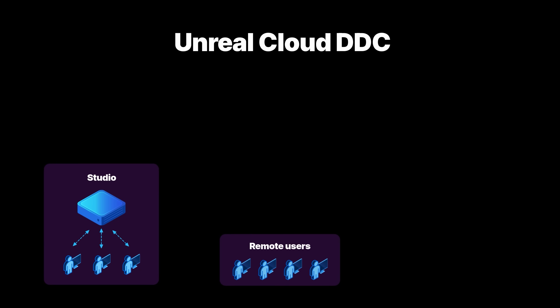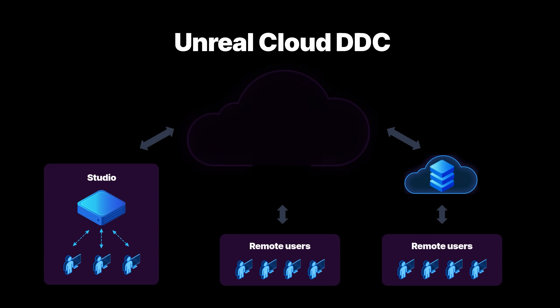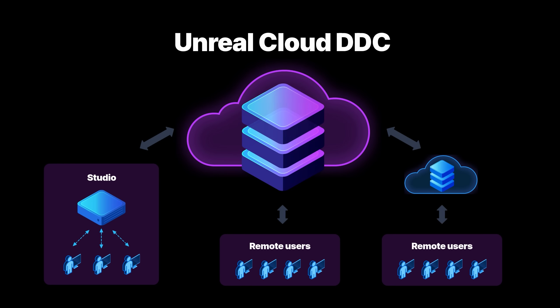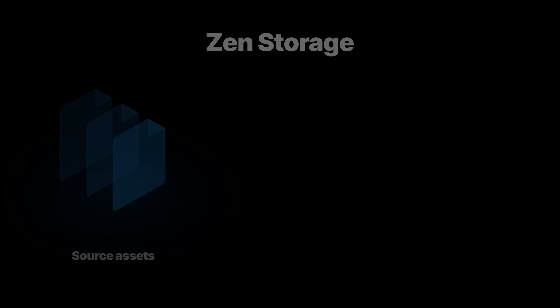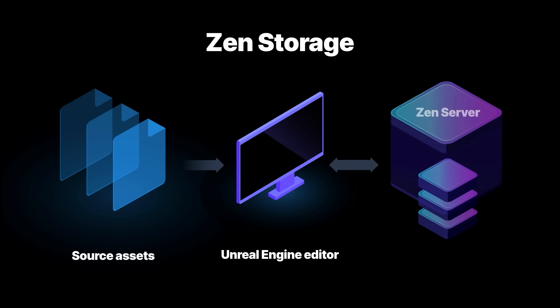New in this release is Unreal Cloud DDC, a self-hosted cloud storage system for the Unreal Engine derived data cache. Designed for distributed users and teams, it enables you to efficiently share Unreal Engine cached data across public network connections. Our local DDC also now uses a new server architecture, offering improved data conditioning performance, faster load times and CI workflows, and other benefits.